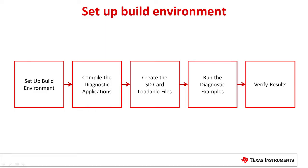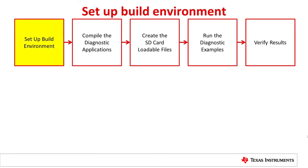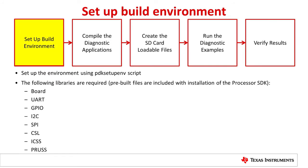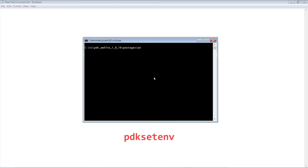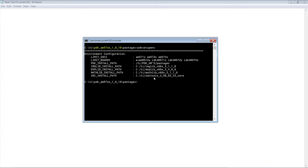Before compiling the diagnostic applications, set up the build environment. The diagnostic application uses the same environment variables as the board library build. Refer to the Build SDK section in the Processor SDK RTOS Developer Guide for more information. The libraries shown here are needed and should come pre-built with any fresh installation of the Processor SDK. Set up your environment using the PDK SetupEnv script. Here, we use AM57x PDK as an example.